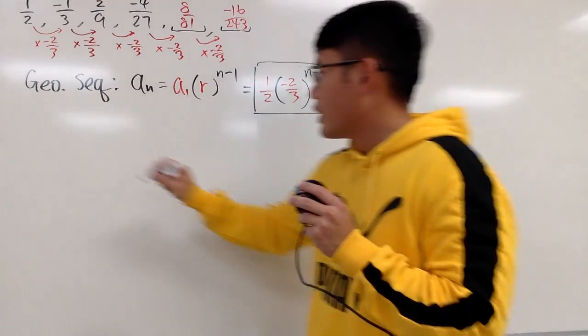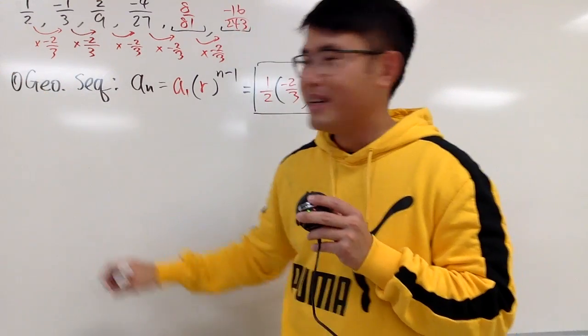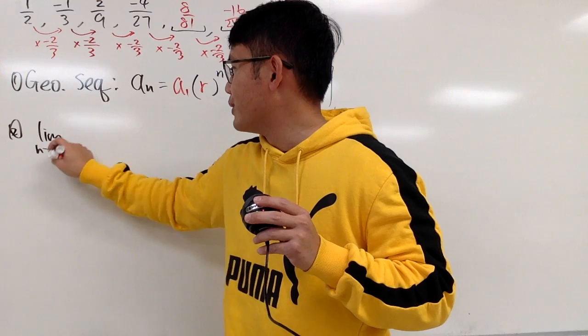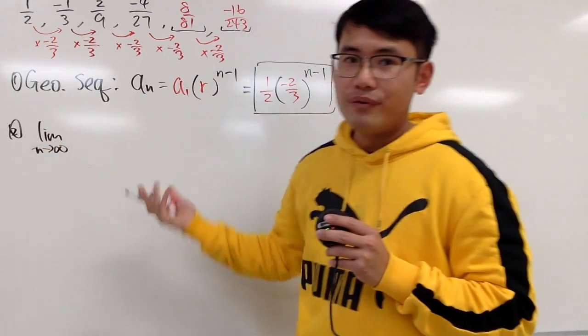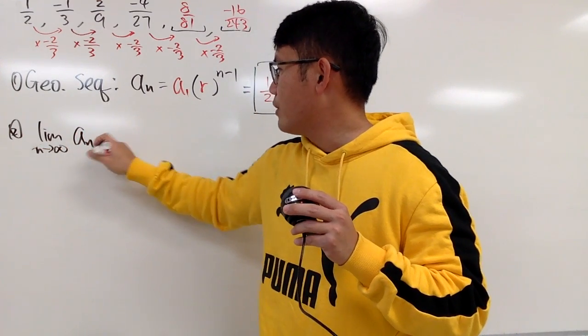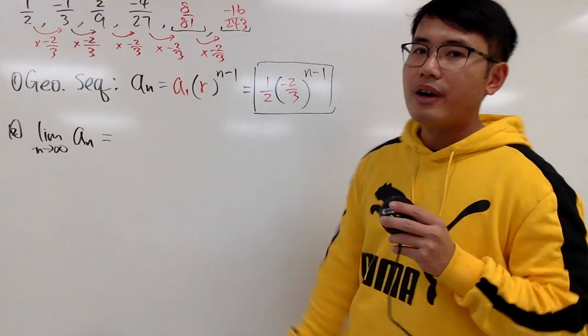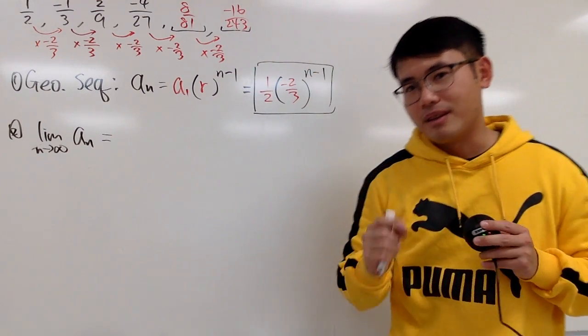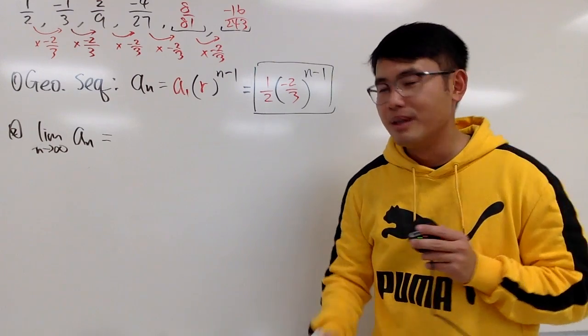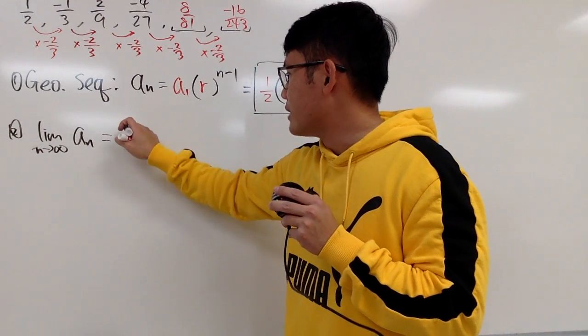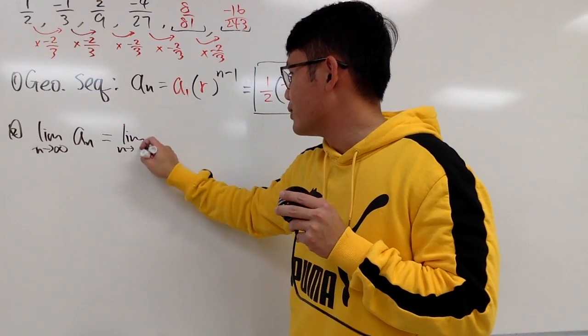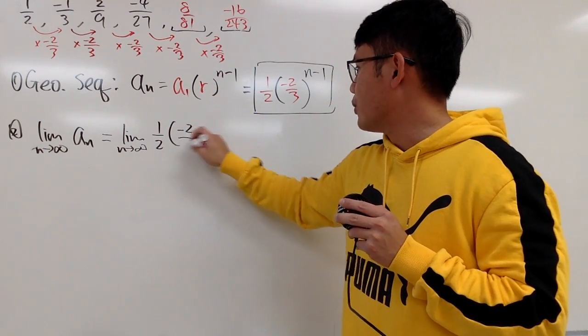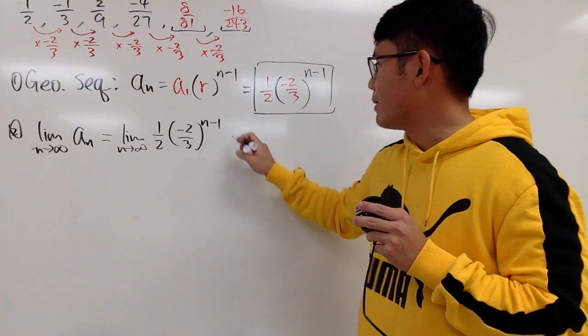Alright, next, this is like part 1. Part 2, we take the limit as n goes to infinity of An. So of course, you have to look at this right here. And you can also see that the terms are getting smaller and smaller. And in fact, it does approach 0. And to see that, you can just take the limit as n goes to infinity and just put this down right here: 1/2 times (-2/3) to the n minus 1 power.